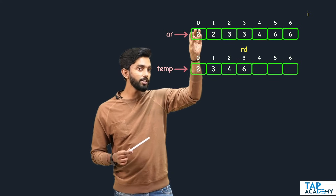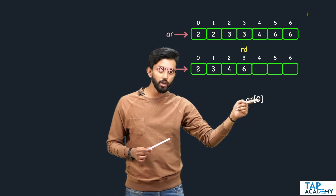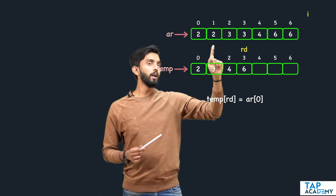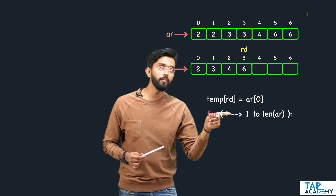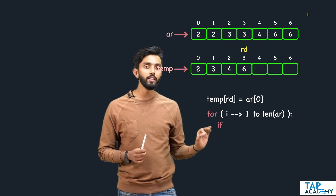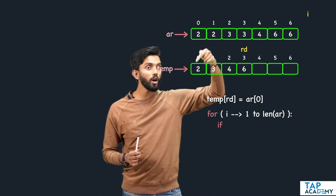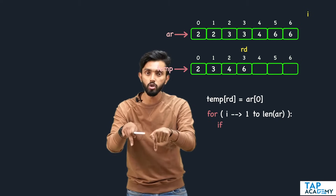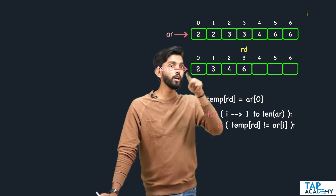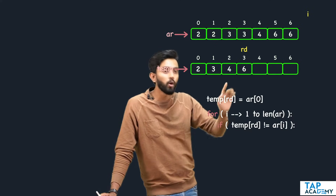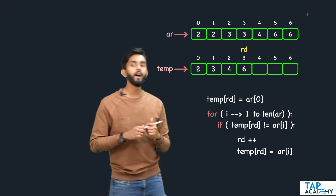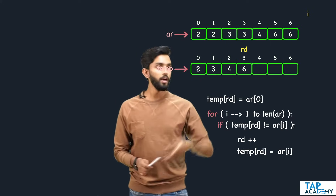Now let's write the code. First, store the first element: ar[0] into temp[rd], since rd is the pointer in the second array. Then run a loop from the second element: for i starting from 1 to length of ar. Inside, check: if temp[rd] is not equal to ar[i], then increment rd (rd++) and store ar[i] into temp[rd]. That's the complete logic.